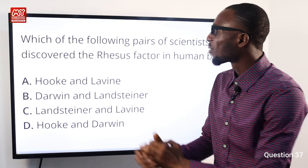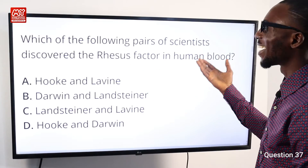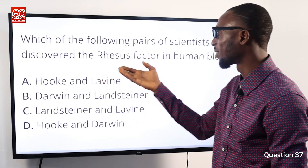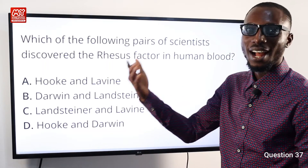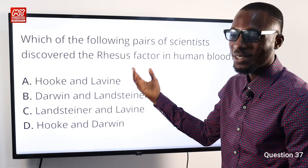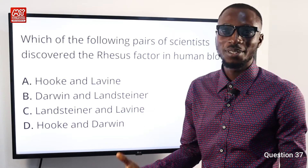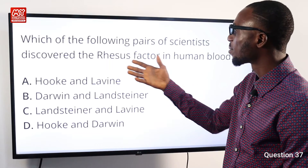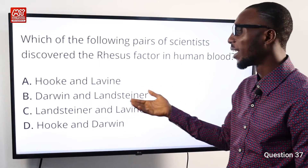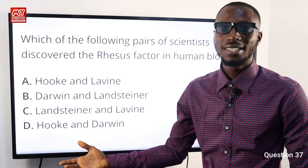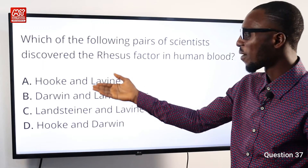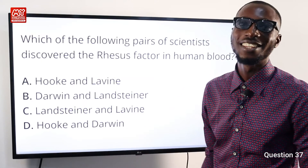Question 37: Which pair of scientists discovered the rhesus factor in human blood? The rhesus factor is a protein present on the outside of blood cells — if present it shows a positive rhesus factor; if absent, a negative rhesus factor. The two scientists who discovered it are Philip Levine and Karl Landsteiner. So option C is very correct.